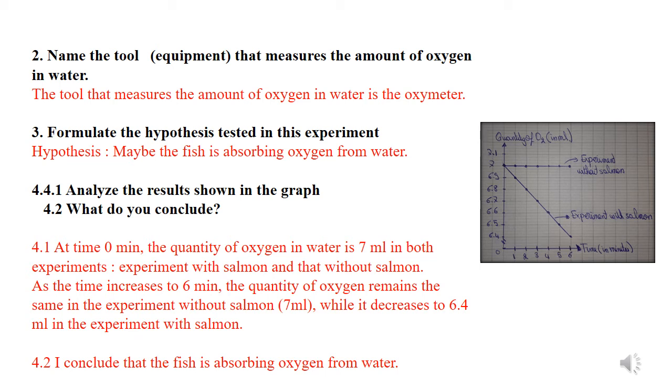Number three, formulate the hypothesis tested in this experiment. What are we trying to prove in this experiment? That the fish is absorbing oxygen because as you can see in the experiment with salmon, the quantity of oxygen decreases while it remains the same in the experiment without salmon. This means that the salmon is absorbing oxygen. So, hypothesis: Maybe the fish is absorbing oxygen from water.